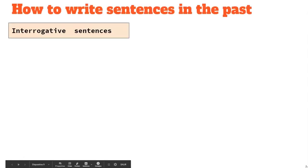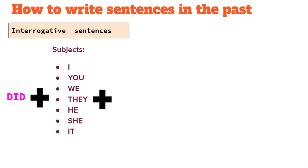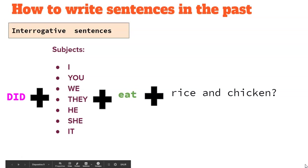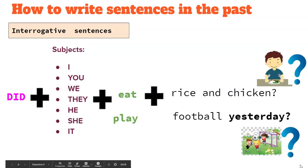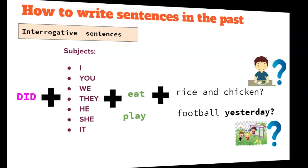Let's go to the next example, interrogative sentences. When you're asking something, we have the auxiliary verb did, plus the subjects of the sentence, plus the verb in infinitive. We're not putting the verb in the past. Plus extra information. Did you eat rice and chicken? Did he eat rice and chicken? With a question mark, because it's a question. Let's go to another example. Did they play football yesterday? Question mark, because if we don't put question mark, we're not having a question.